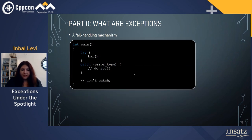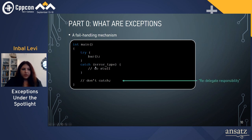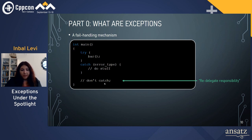In our main function, we have the bar function which contains foo. We can catch the error there, but we could also re-delegate the responsibility. In a way, when we decide not to catch the error, we're passing the responsibility to our operating system. That's a way of looking at the exception mechanism being propagated outside of our program's scope.